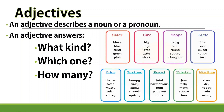Adjectives can vary across different categories: color (black, blue), size (big, huge, large, little, short), shape (oval, round, square), taste (bitter, sour), odor (musty, fresh), texture (bumpy, slimy, smooth), sound (harmonious, loud, pleasant), number (few, fifty, many, sparse), and weather (sunny, dry, foggy, rainy, windy). These are all examples of adjectives.